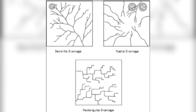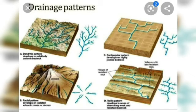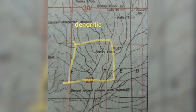Then we have the rectangular drainage pattern, where the main stream on both sides has almost a 90-degree angle. We also have the trellis drainage pattern, where from the main stream the smaller streams again make a 90-degree angle with the main black color line.